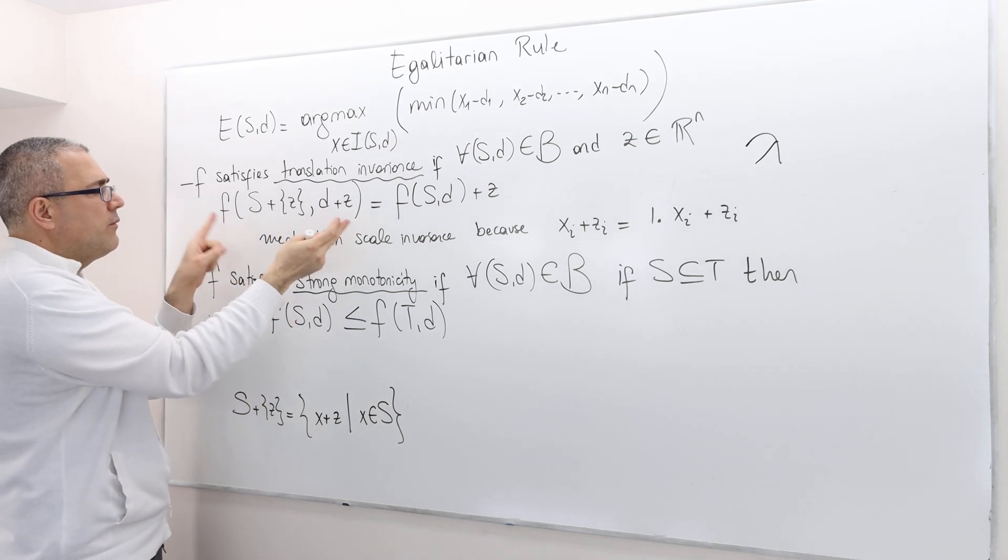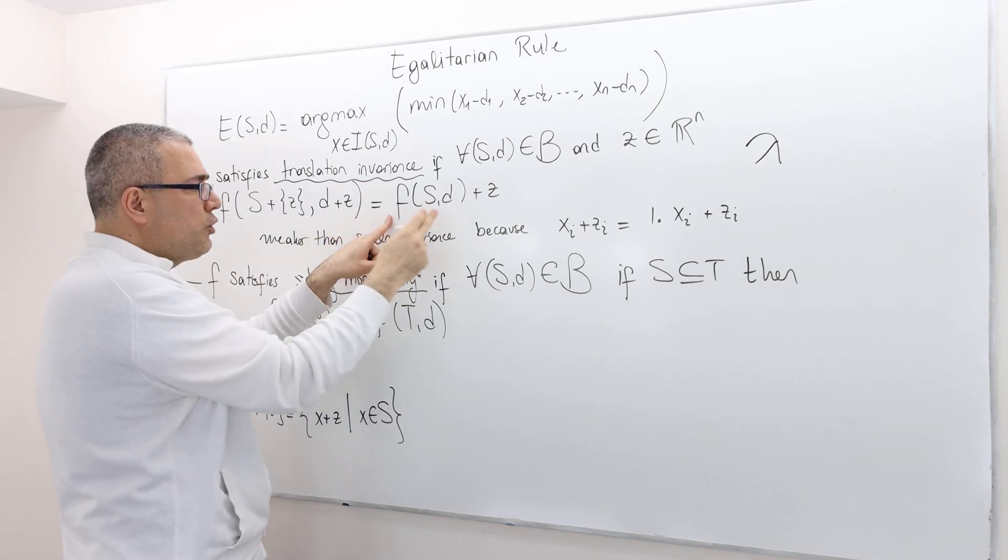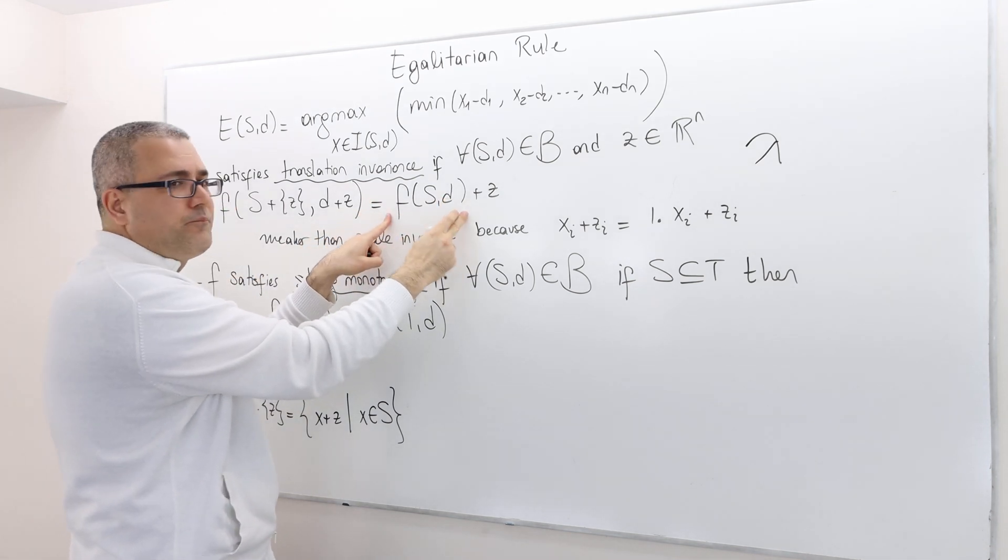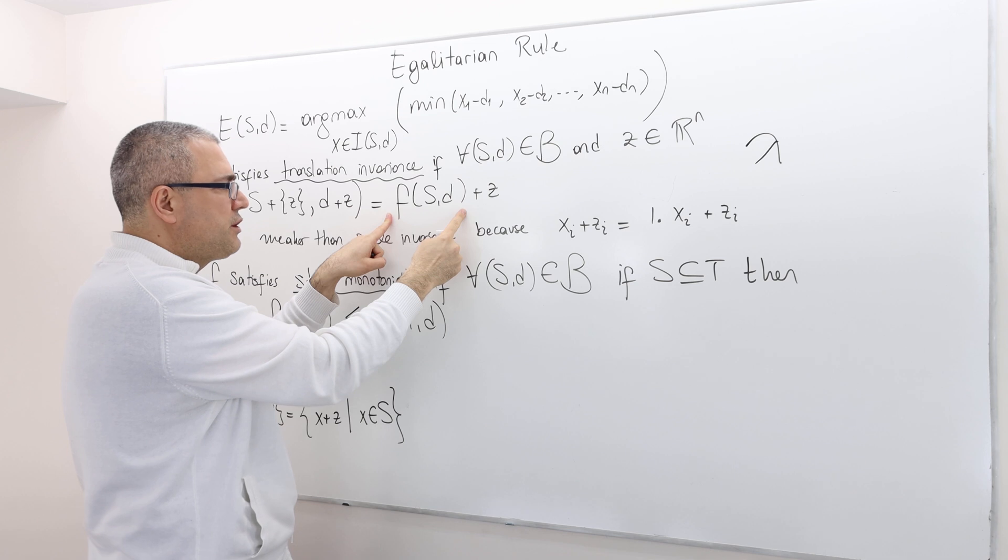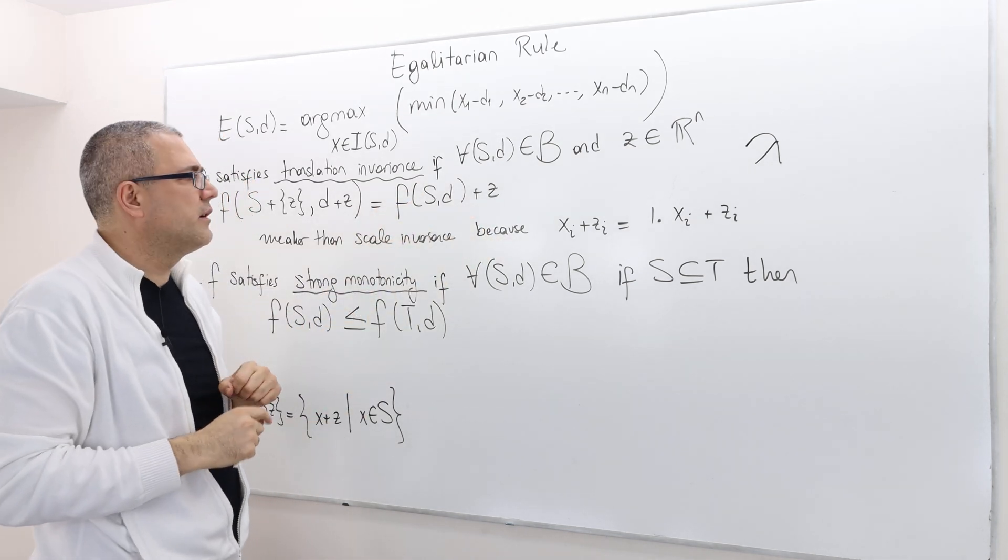When I look at the solution of this transformed bargaining problem, it should be equal to the solution of my original bargaining problem plus this Z vector.